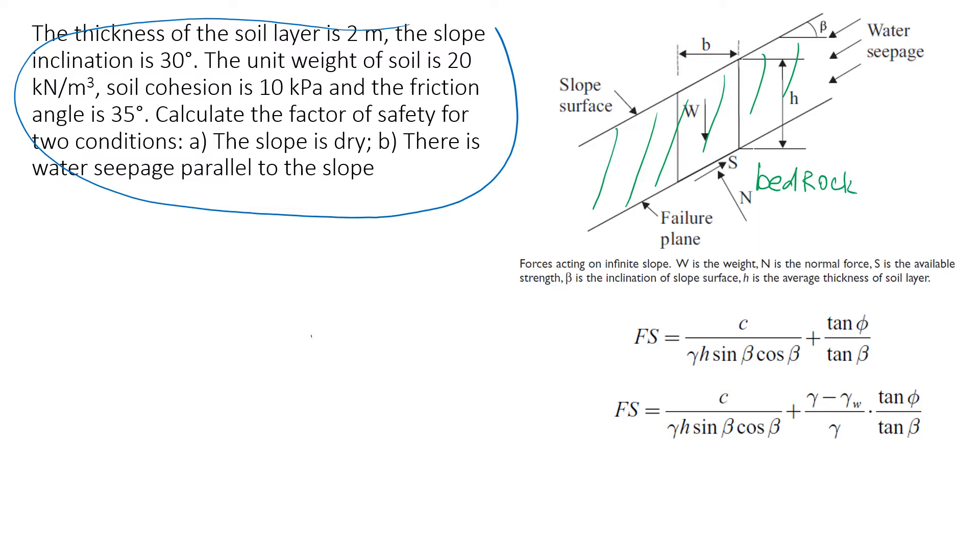We're going to look at this thickness and weight of that material that is going to move. We need to know the weight of it and the thickness, which will go as h. So h is the average thickness of this material that is going to fail. We also need to know the inclination of the failure plane. We assume that the failure plane will be on the boundary between weathered soil and the bedrock, and typically we would assume that a slope surface is almost the same as the inclination of the failure plane.